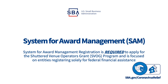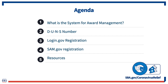Registration in SAM is a requirement for entities applying for Shuttered Venue Operators Grants. We'll cover what SAM.gov is and why registration is required, then walk you step-by-step through the application process — including applying for and receiving a DUNS number, creating a login.gov account, and registering your entity in SAM. At the end of today's session, we'll discuss additional resources available to assist you. SAM registration is a straightforward process, and following these steps will help you get registered as efficiently as possible.